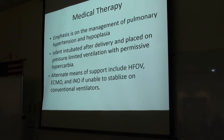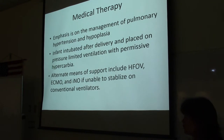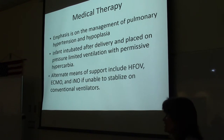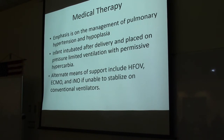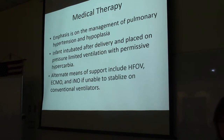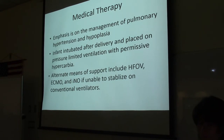You might think to rush these infants to surgery immediately, but that's not what happens — the newborn has to be stabilized first to ensure you can ventilate them. They may need to go on ECMO, where blood is taken out of the body, oxygenated, and put back in. The pulmonary hypertension that comes with this disease responds to nitric oxide, which will be covered in the next lecture. HFOV — high-frequency oscillatory ventilation — is another way of ventilating these newborns.